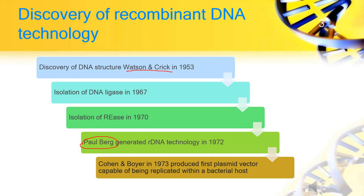The first DNA structure was discovered by Watson and Crick in 1953. After that, DNA ligases were isolated in 1967. Then the first production of a recombinant DNA molecule using restriction enzymes occurred in the 1970s. Paul Berg generated the first recombinant DNA in 1972.